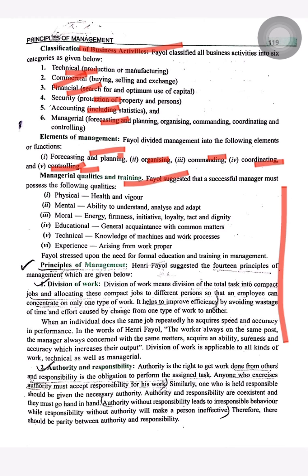Regarding managerial qualities and training, what qualities should a successful manager have according to Henry Fayol? First, Physical qualities — he should be healthy and vigorous. Mental qualities — ability to understand, analyze, and adapt to the situation and take proper decisions. Moral qualities — Energy, Firmness, Initiative, Loyalty, Tact, and Dignity should be present for successful management.